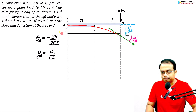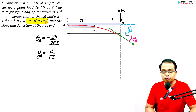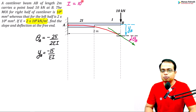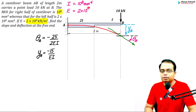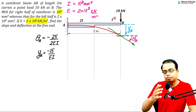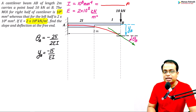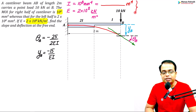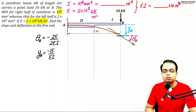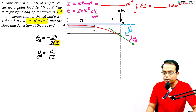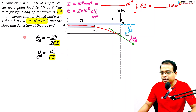As a task, take I = 10⁸ mm⁴ and E = 2 × 10⁸ kN/m². Convert I to m⁴, then compute EI. Plug that value into the slope and deflection expressions to get the numerical answers in radians and meters respectively.